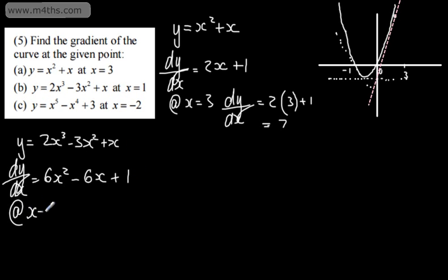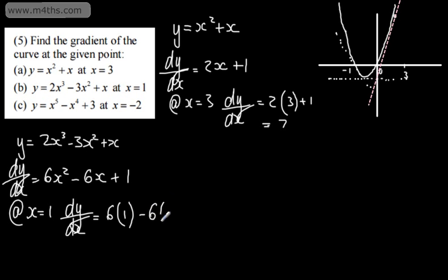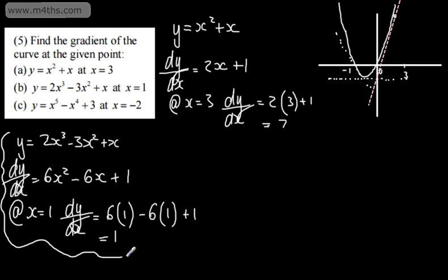So at x is equal to 1, we can say that dy by dx — the gradient of that curve at the point where x is 1 — will be 6 lots of 1 squared, minus 6 lots of 1, and then plus 1. So that is going to give me a gradient of 1. I've simply evaluated the gradient of a cubic function at the point where x is equal to 1.